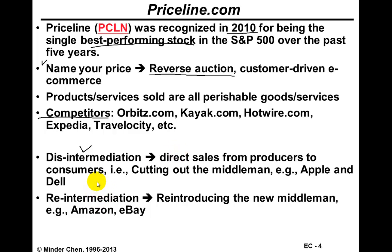However, disintermediation seems to have its limits and hasn't been fully realized. So another phenomenon emerged, which we call re-intermediation, which means a new middleman or middle person has been reintroduced. Companies such as Amazon or eBay can be considered re-intermediators — they are the new intermediaries. Amazon is not a publisher, but they sell a variety of books and other goods from various publishers and manufacturers to the consumer.